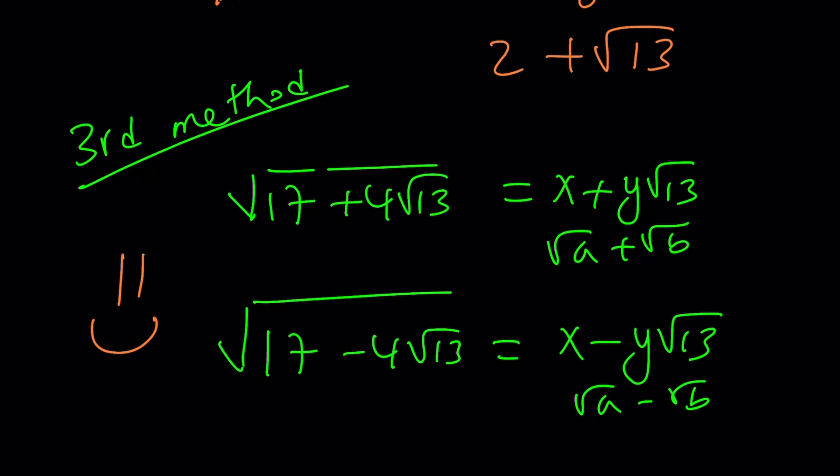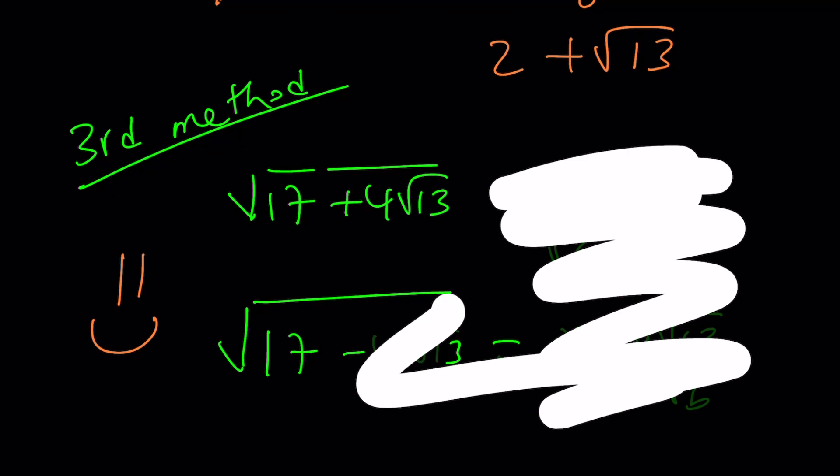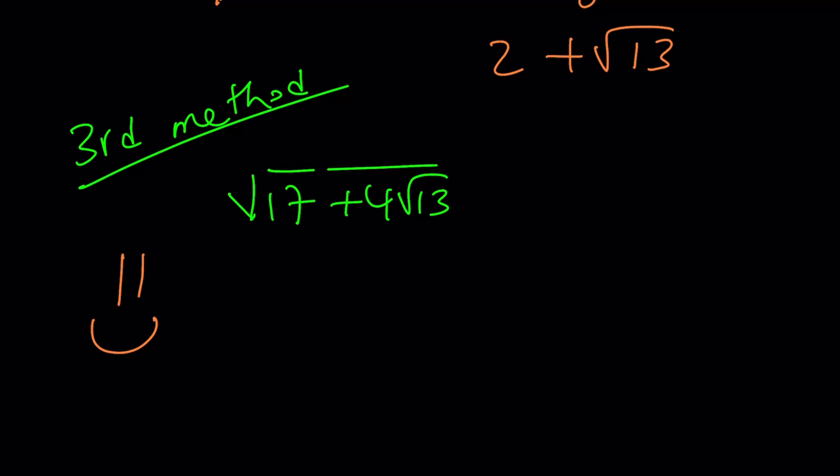And I just want to say something. Instead of setting these equal to different things, here's what you can do. I think this is what I meant by the third method. You can go ahead and add these conjugates. Call it something, like, let's say, x. And then their difference. Call it something else. And then go from there.